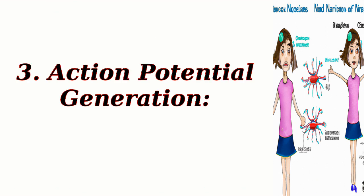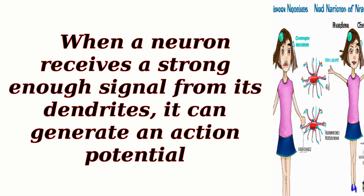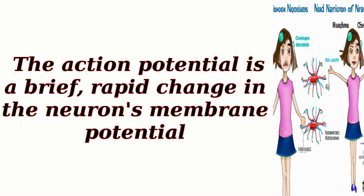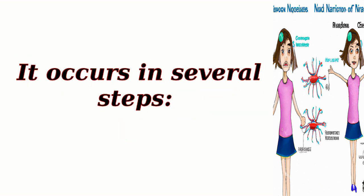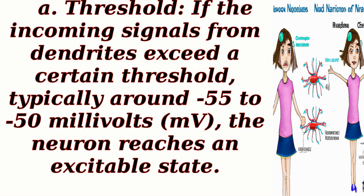Action potential generation: When a neuron receives a strong enough signal from its dendrites, it can generate an action potential. The action potential is a brief, rapid change in the neuron's membrane potential. It occurs in several steps. Threshold: if the incoming signals from dendrites exceed a certain threshold, typically around -55 to -50 millivolts (mV), the neuron reaches an excitable state.